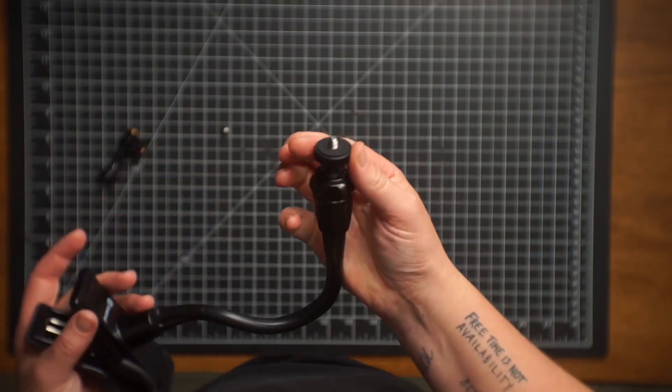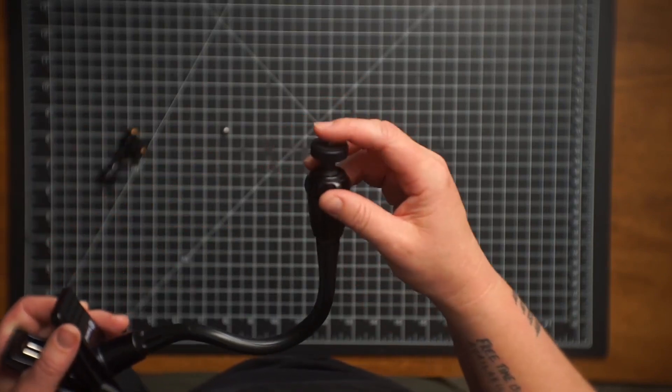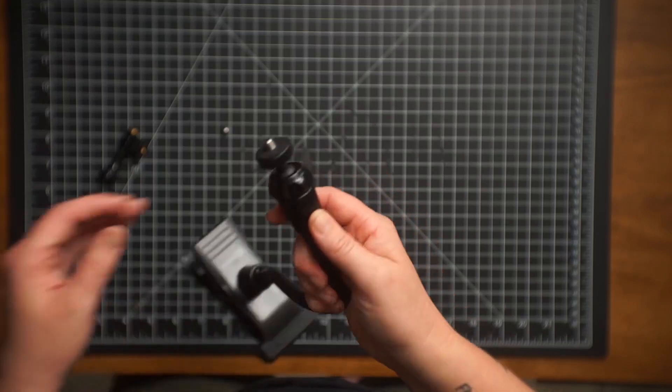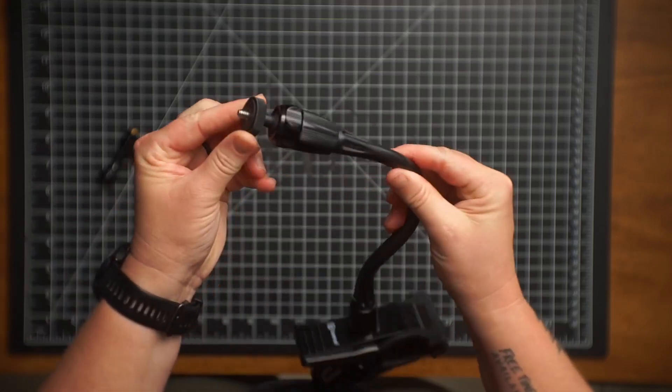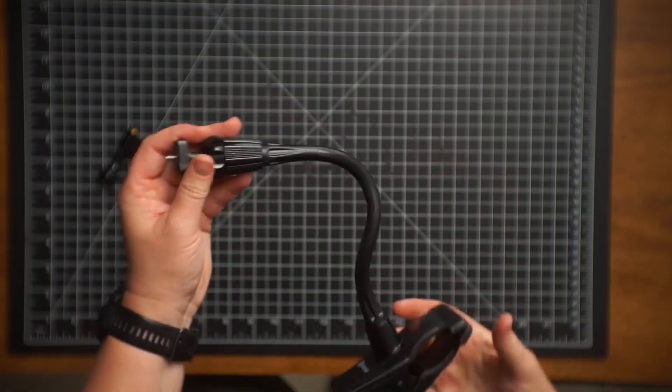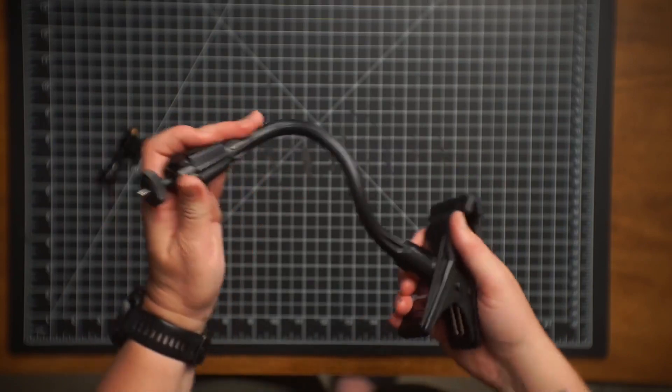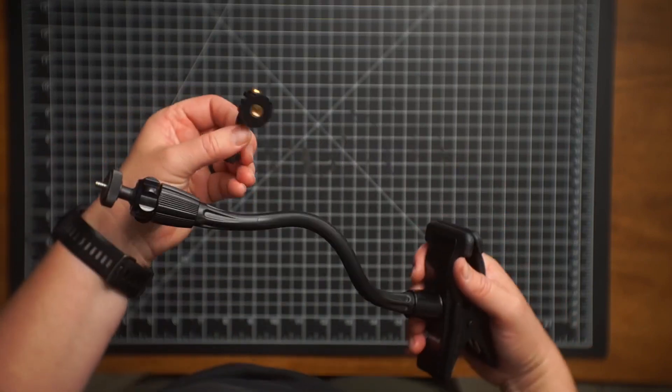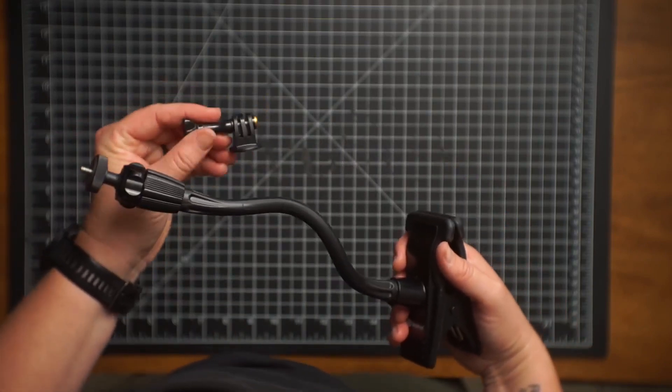So you can use just the quarter thread here too, if you want to mount a camera or a different ball head or quick release mount or something right there. You've also got that option, which is probably how I'll use this. But always nice to get a little extra tripod adapter for your GoPro mount.